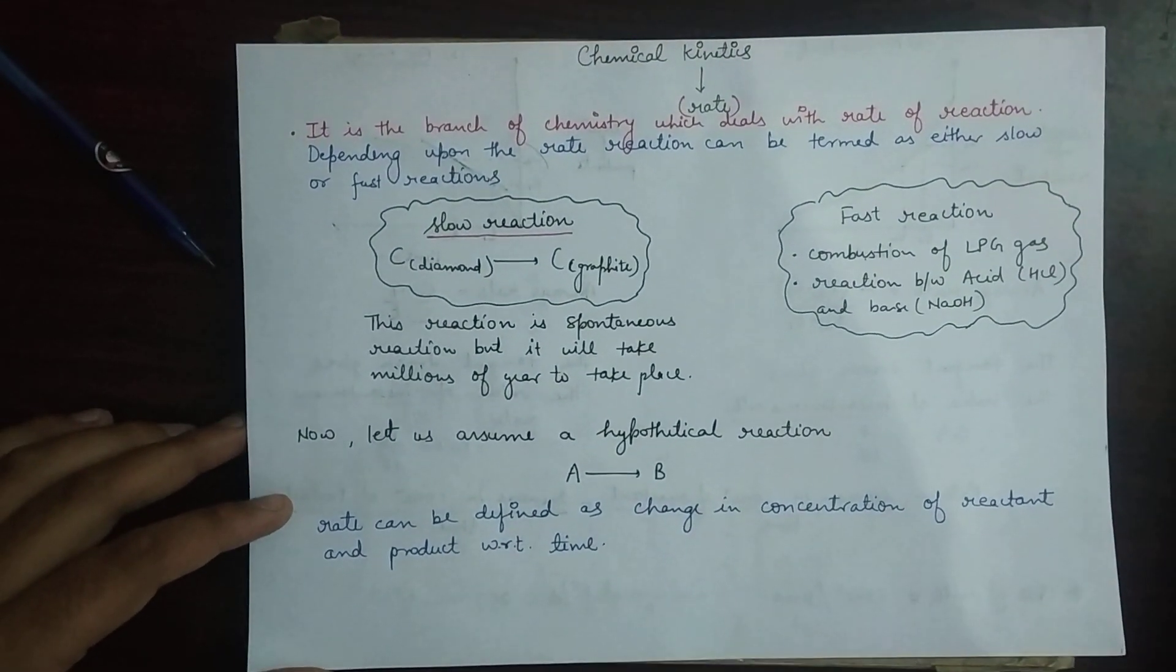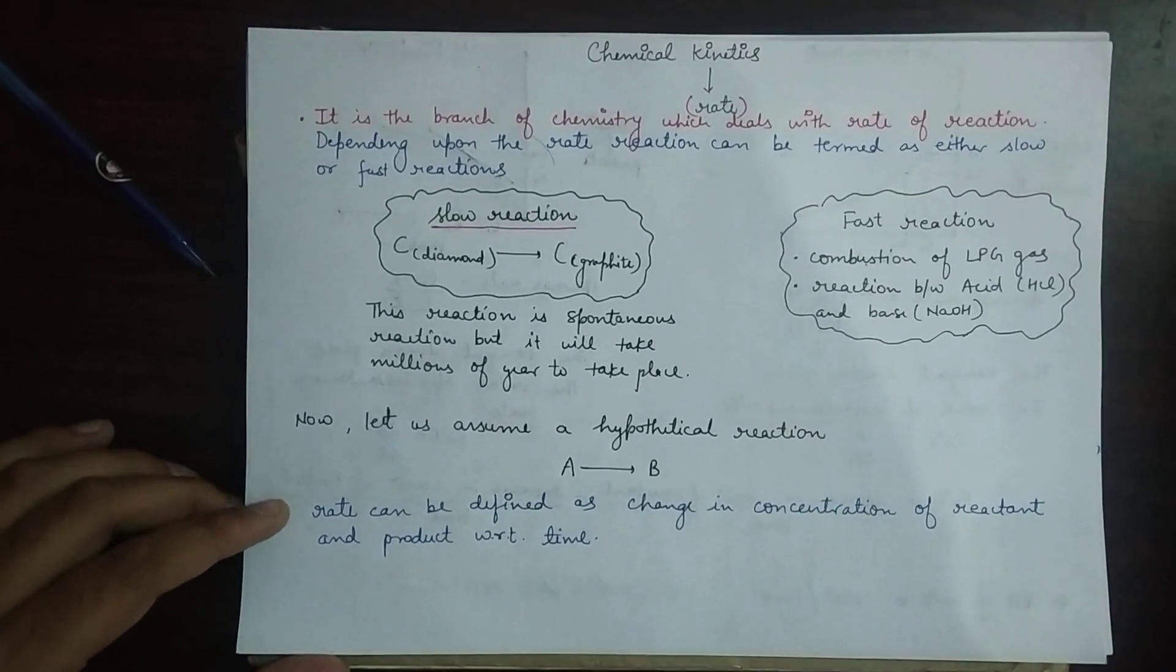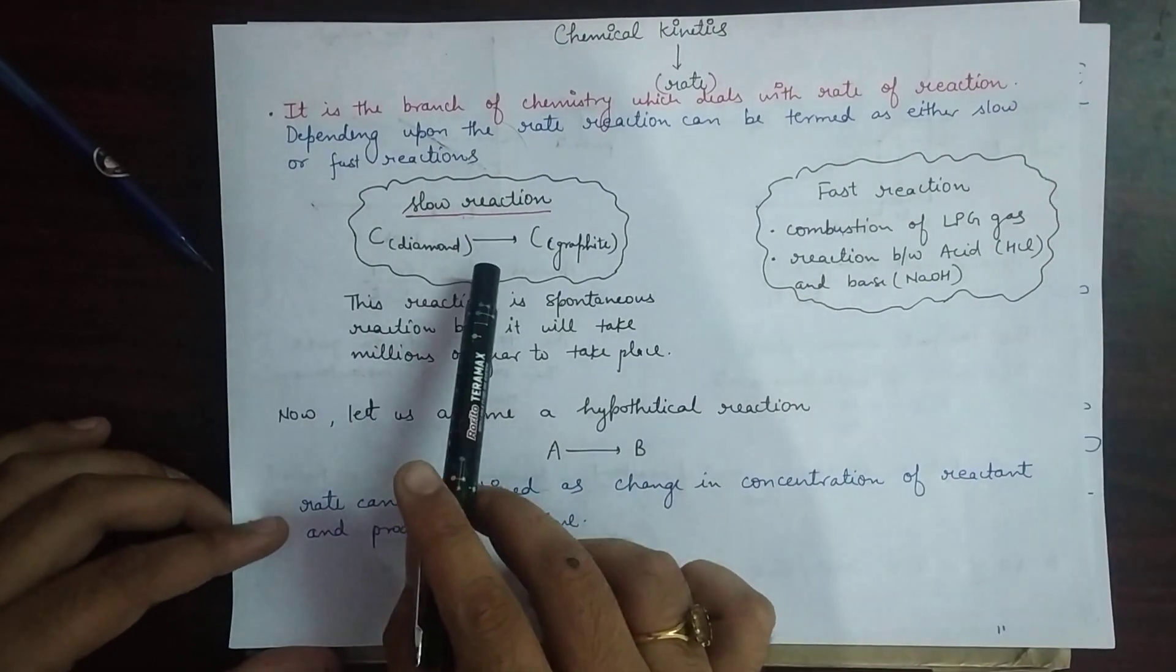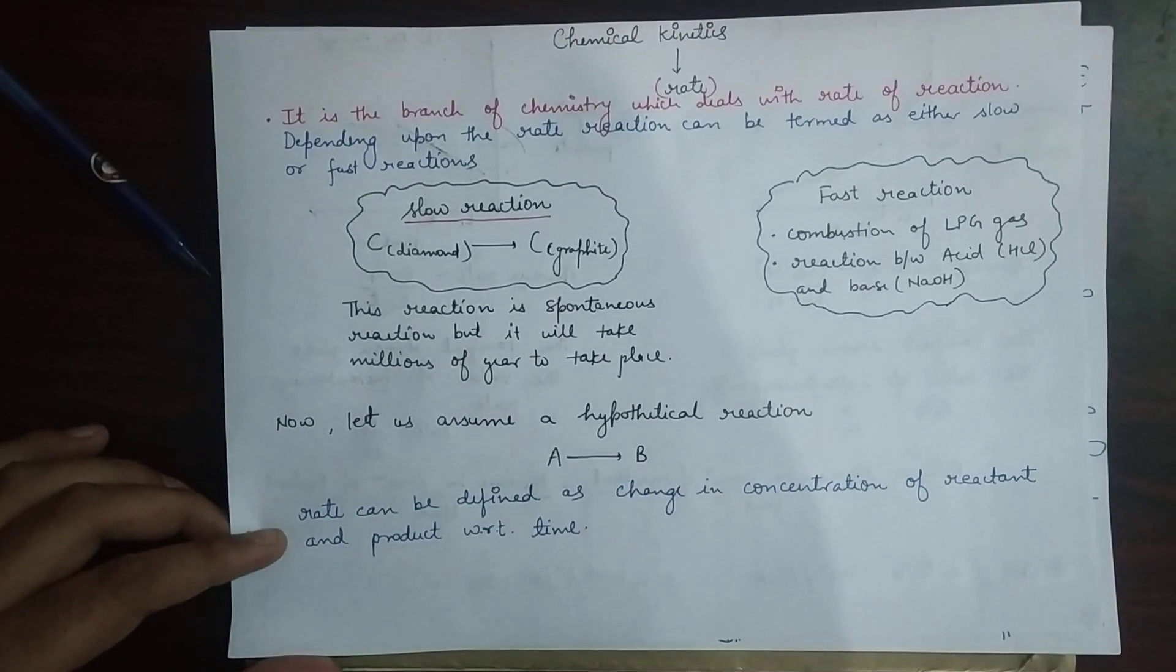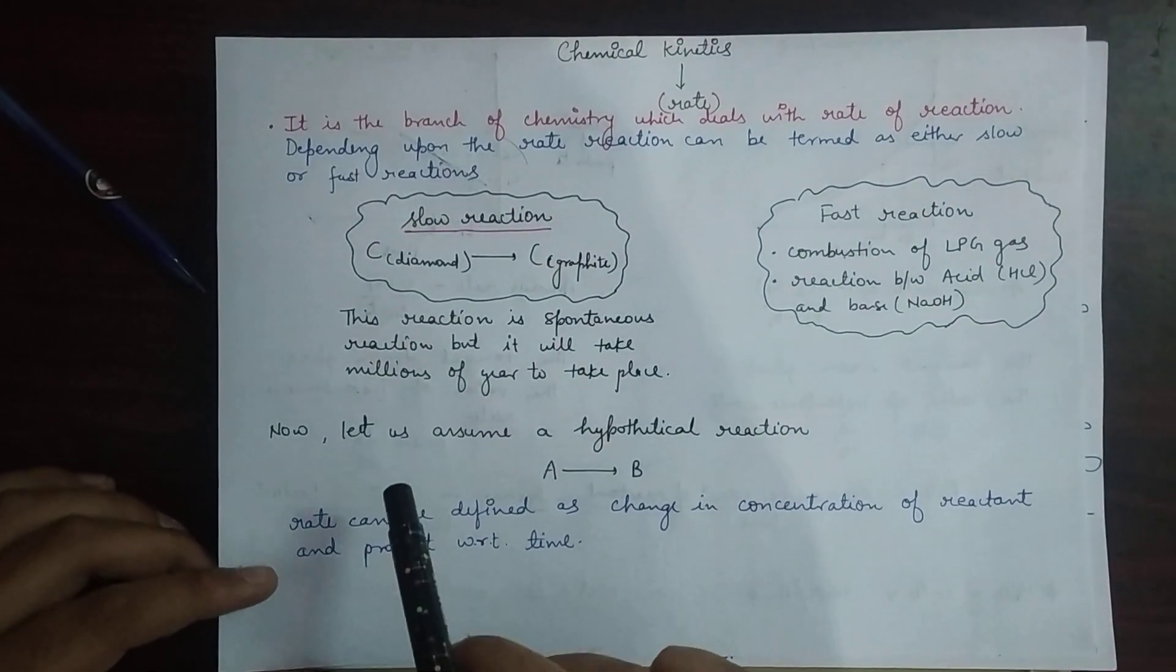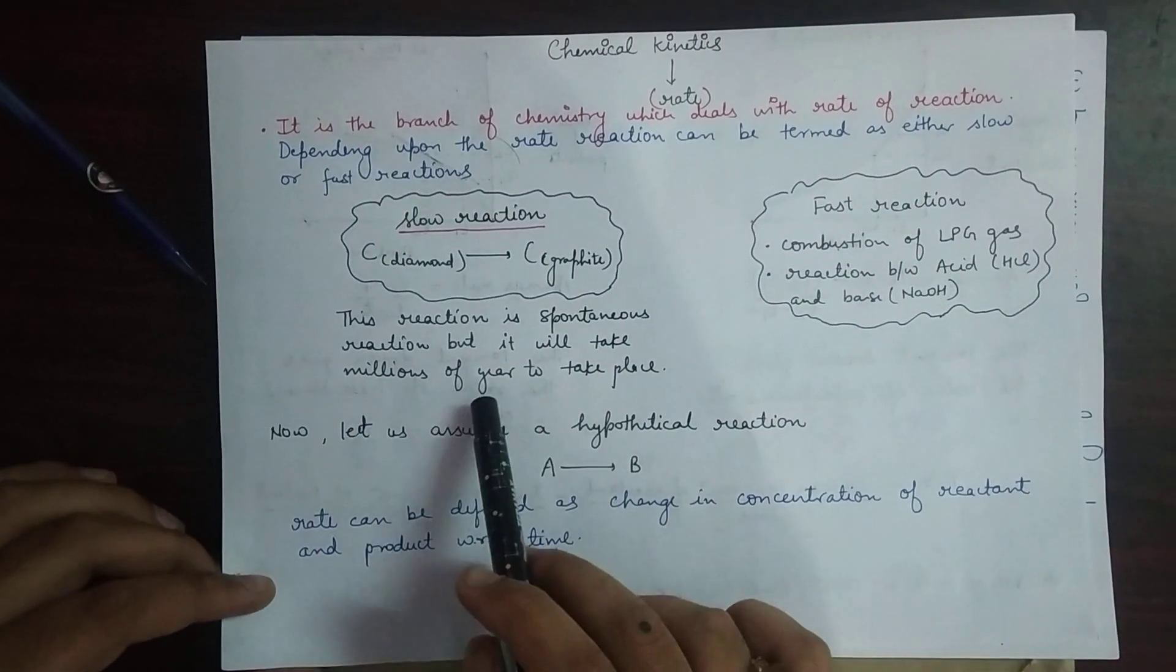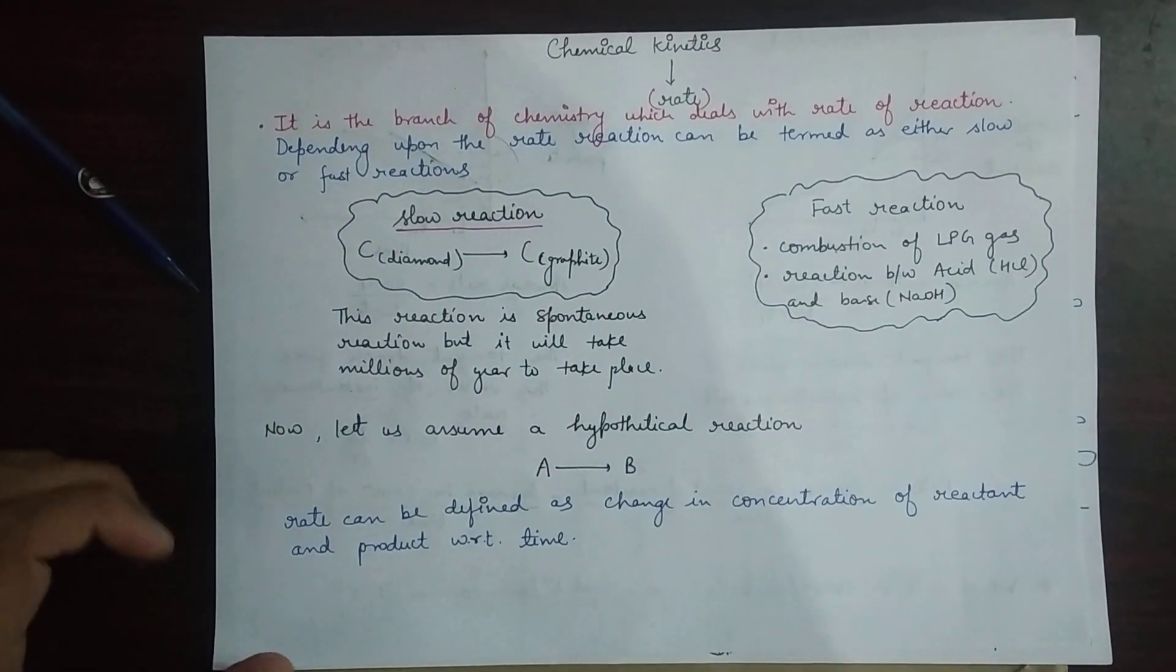Depending upon the rate, it can be defined as either slow reactions or fast reactions. Slow reactions like carbon—one of its allotropes, diamond—getting converted to graphite. As we have studied in class 11, the conversion of diamond to graphite is a spontaneous reaction, but it will take millions of years, so it can be defined as a slow reaction.